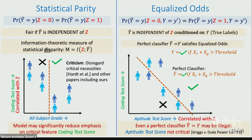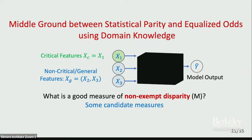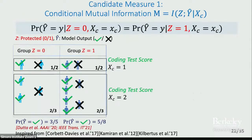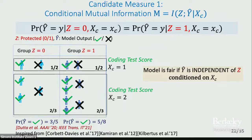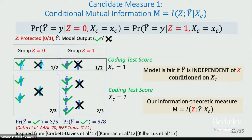Our approach adopts a middle ground between statistical parity and equalized odds using domain knowledge. We first assume that the critical features are given to us, and then our question becomes: what is a good measure of non-exempt disparity? One candidate measure is conditional mutual information or conditional independence — the model is fair if the output y-hat is independent of z conditioned on the critical feature, like the coding test score. The information-theoretic quantification of this is conditional mutual information between z and y-hat conditioned on x_c.